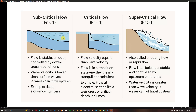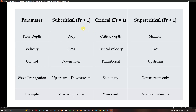The summary table compares flow types by depth, velocity, controls, and wave propagation. Subcritical flow is deep and slow, controlled downstream, with the Mississippi River as an example. Critical flow has critical depth and critical velocity with transitional control. Supercritical flow is shallow and fast, controlled upstream, with mountain streams as an example.